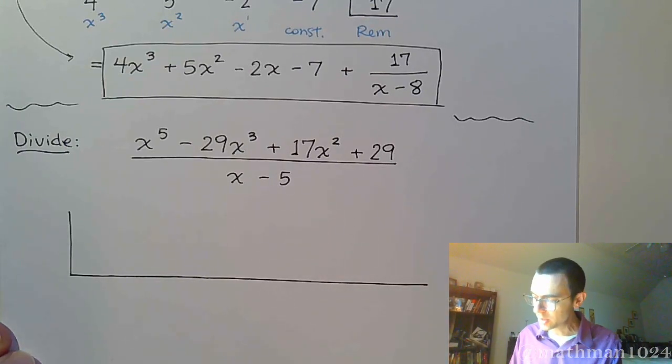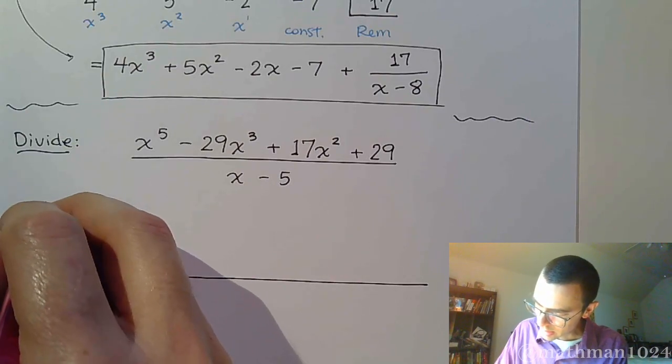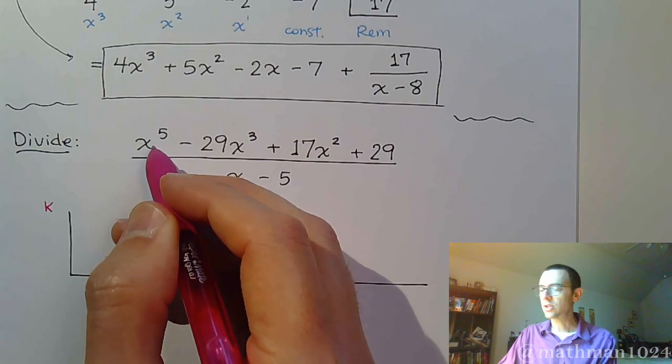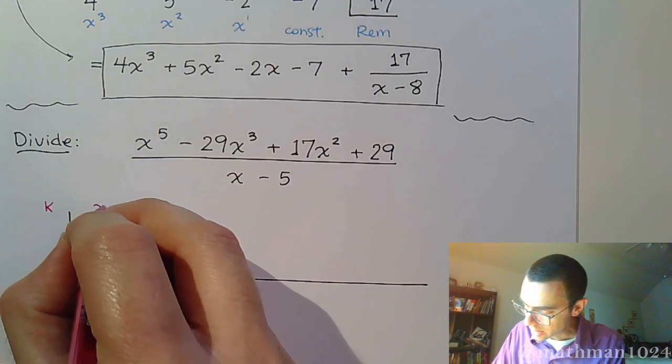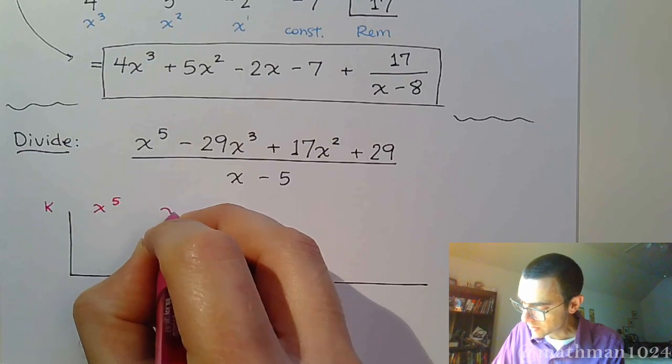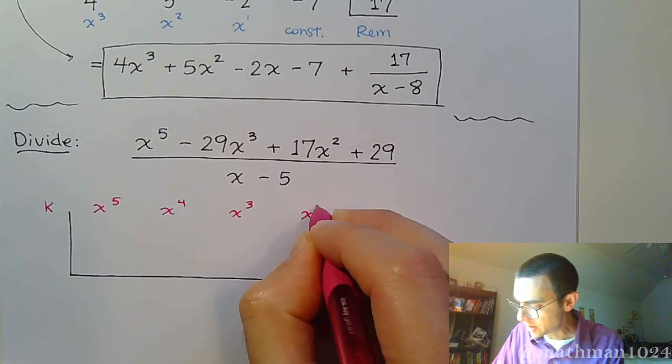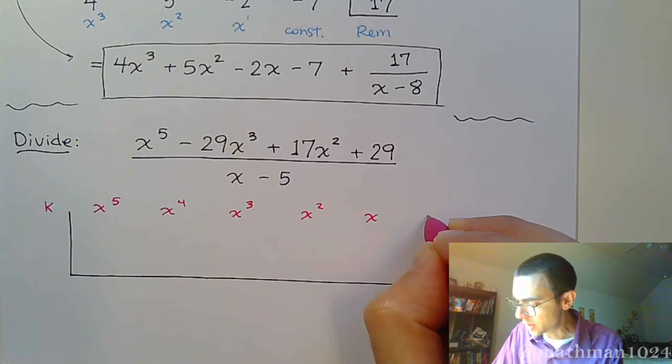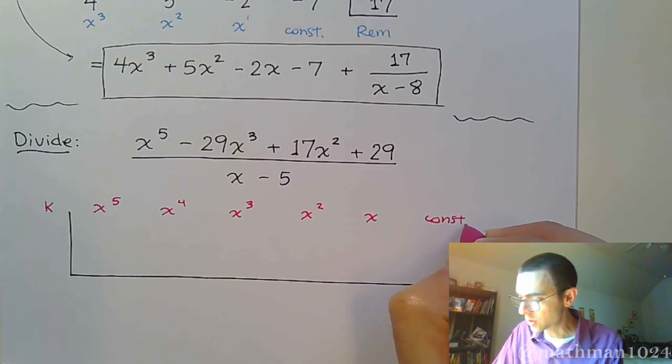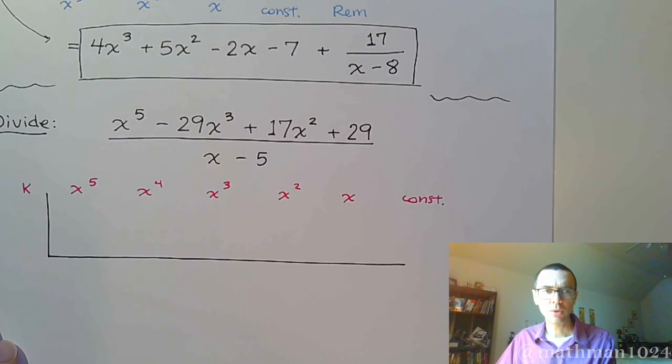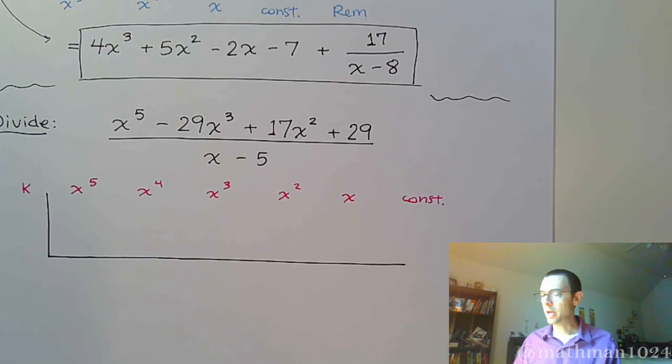So as we've been doing, there's my heading for K right there. I see I've got x to the 5th, so that's the highest degree term that I see. So x to the 5, 4, 3, 2, 1, 0, which is going to be, 0 degree is going to be our constant term. Now, let's put our numbers in.